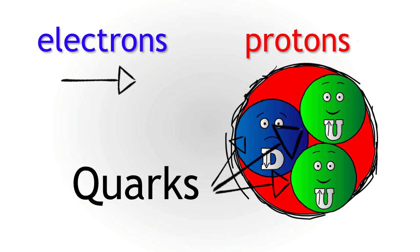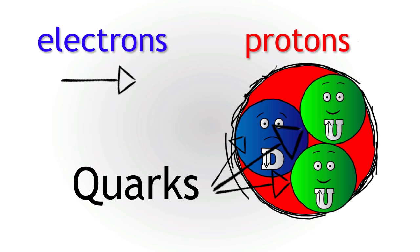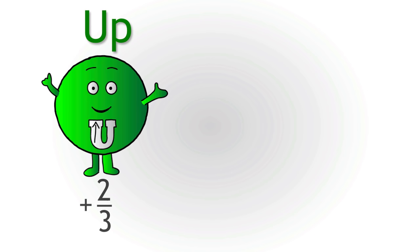At the time, there were two basic quarks. The up quark, which has a charge of plus two thirds of the charge of an electron, and the down quark, which has a charge of minus a third.